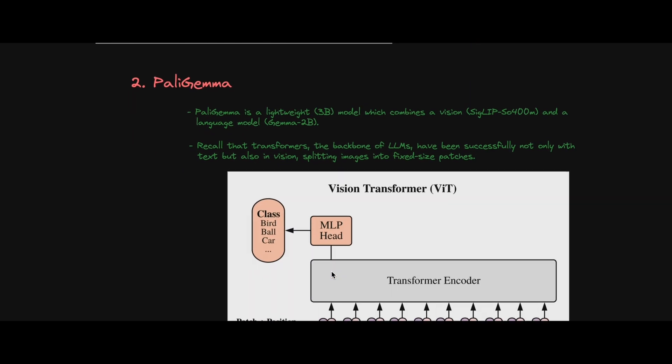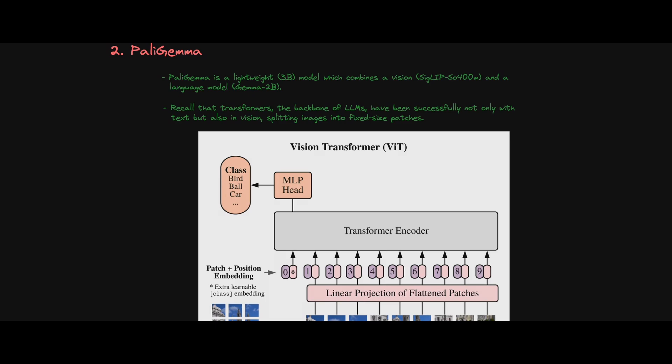The second component is PaliGemma. PaliGemma is a composition of two models: the SigLIP 400M model and the Gemma 2 billion parameter model.